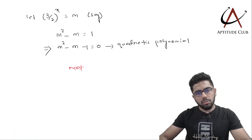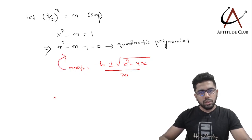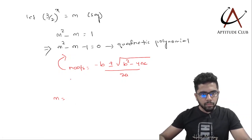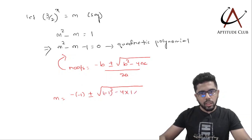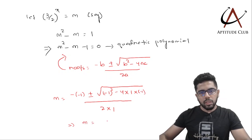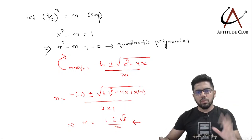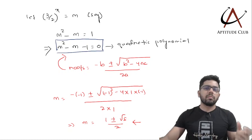For a quadratic polynomial, the roots are given by the formula: minus b plus or minus square root of (b² minus 4ac) divided by 2a. Applying this here, where a=1, b=−1, c=−1: m equals 1 plus or minus square root of (1 + 4) divided by 2, which gives m equals (1 ± √5) / 2. These are the roots of our quadratic equation.